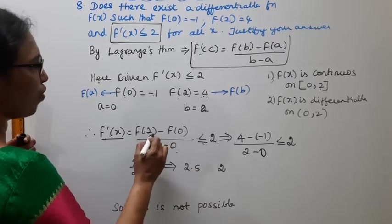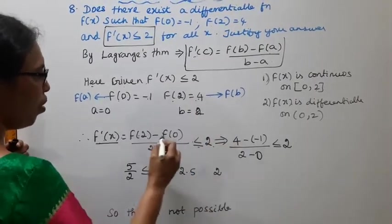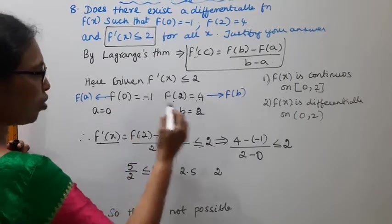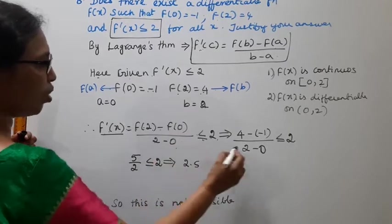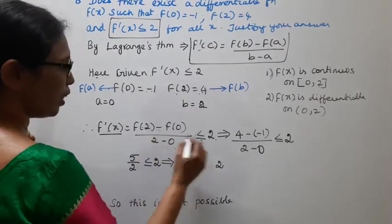By theorem, f(2) value is 4, minus f(0) which is -1, minus of minus 1, divided by (b - a), 2 - 0.